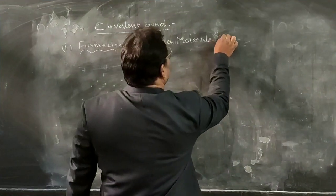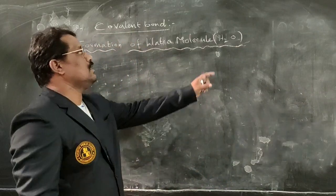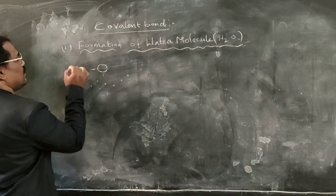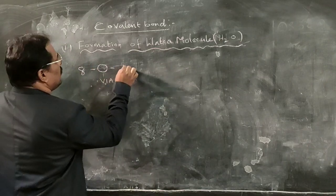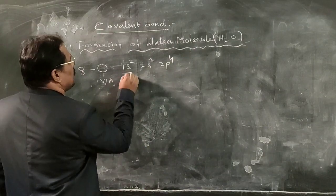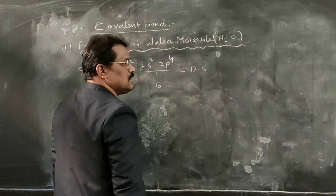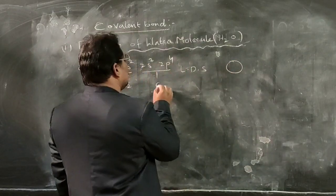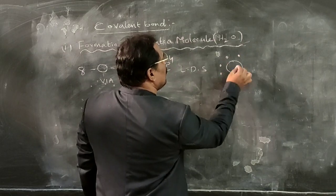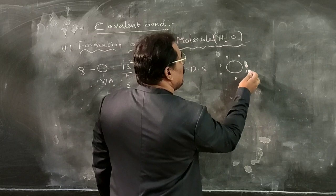Next is the formation of the water molecule, whose formula is H2O. Within the water molecule also, two different elements are present: one is hydrogen and the other is oxygen. For oxygen, whose atomic number is 8, belonging to the 6th A group element, the electronic configuration is 1s2, 2s2, 2p4. The first shell has 2 electrons and the second shell has 6 electrons.